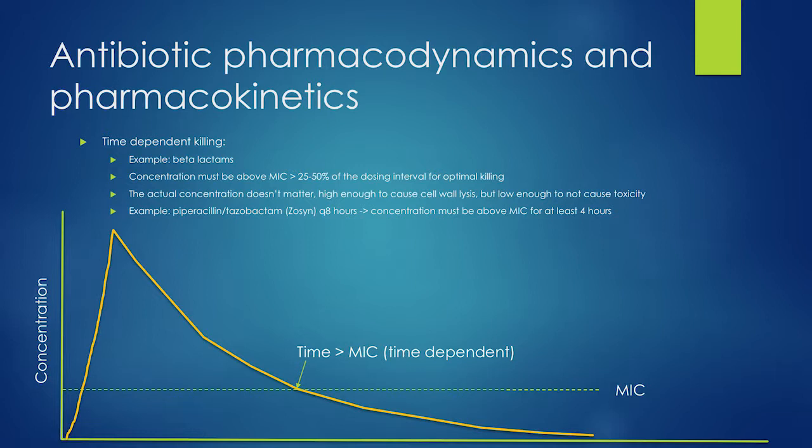The concentration has to be above the MIC for around 25 to 50 percent of the dosing interval. For example, if you give Zosyn 3.375 grams every eight hours, you need that concentration to be above the MIC of the bacteria for at least four hours of each dosing interval, or about 12 hours out of the day.